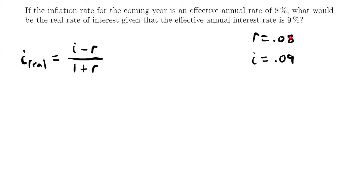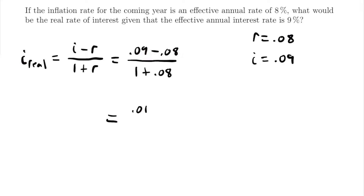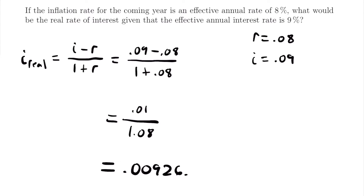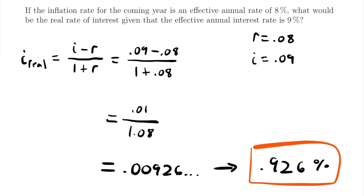If we plug these two values into the formula, we will have that the real rate of interest is equal to 0.09 minus 0.08 divided by 1 plus 0.08. That equals 0.01 — since 0.09 minus 0.08 is 0.01 — divided by 1.08. Plugging 0.01 divided by 1.08 into your calculator, you will find that the real rate of interest is equal to 0.00926, which is 0.926%. That will be the real rate of interest for this scenario.